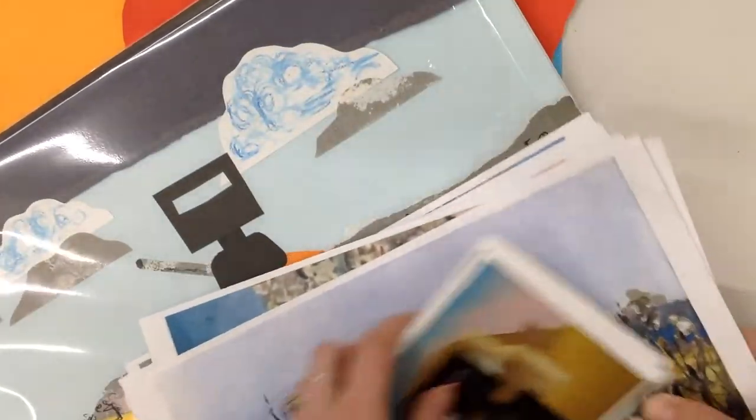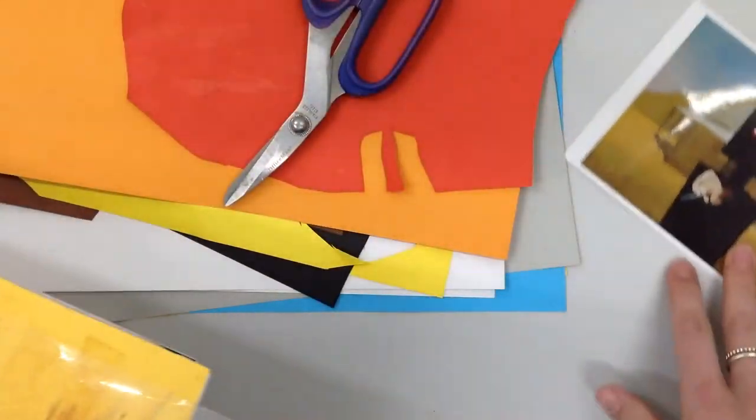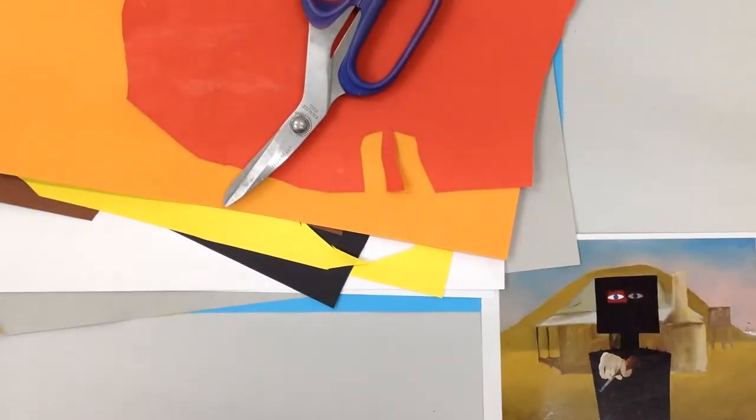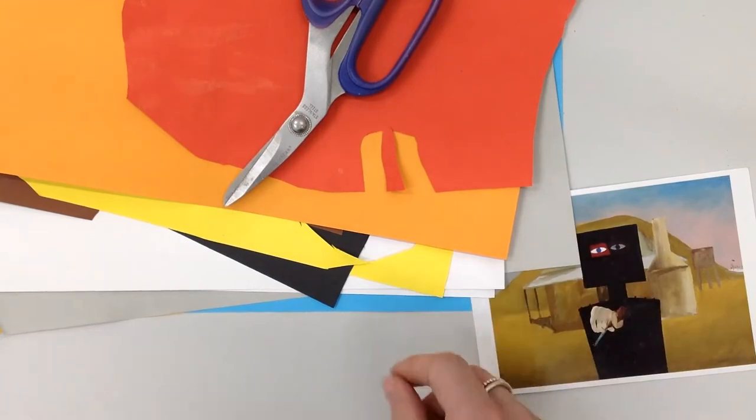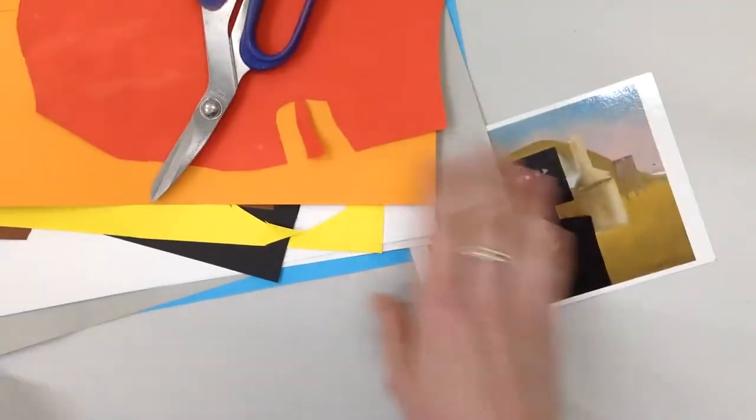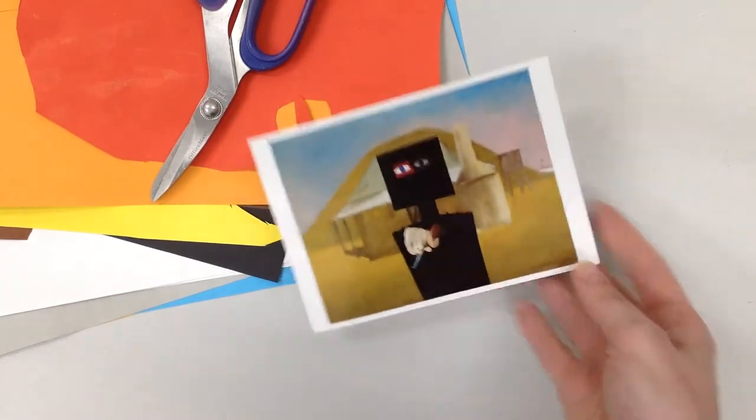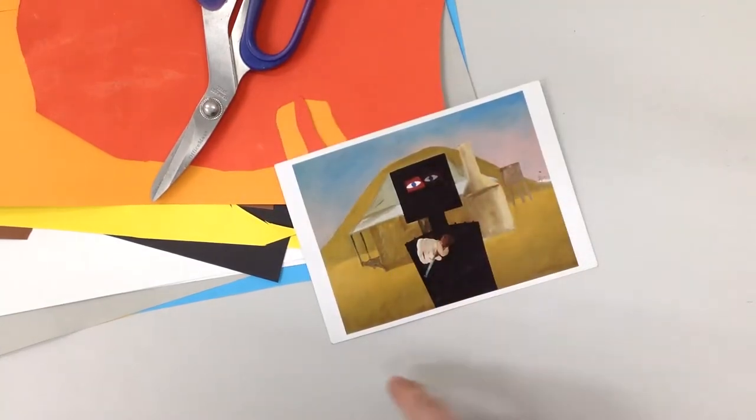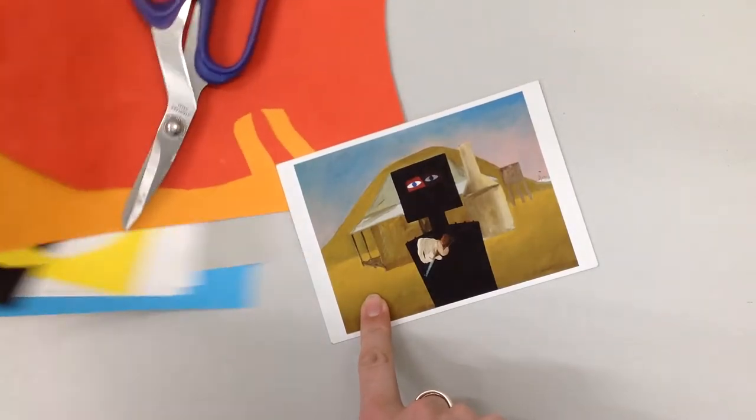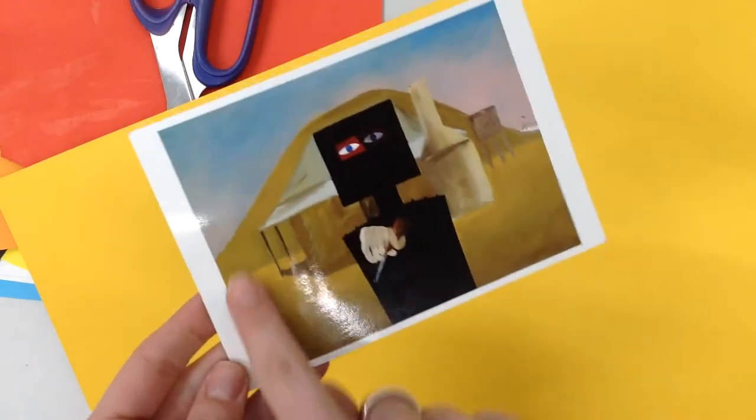So first thing I want to do is obviously keep my image at hand so that I know what shapes and what composition I'm looking for. First job is select an A3 colored piece of paper that is going to be your main color in your background. For this I'm going to choose this deep yellow, because if you look at the image, this yellow section is the most obvious and common color in the background.